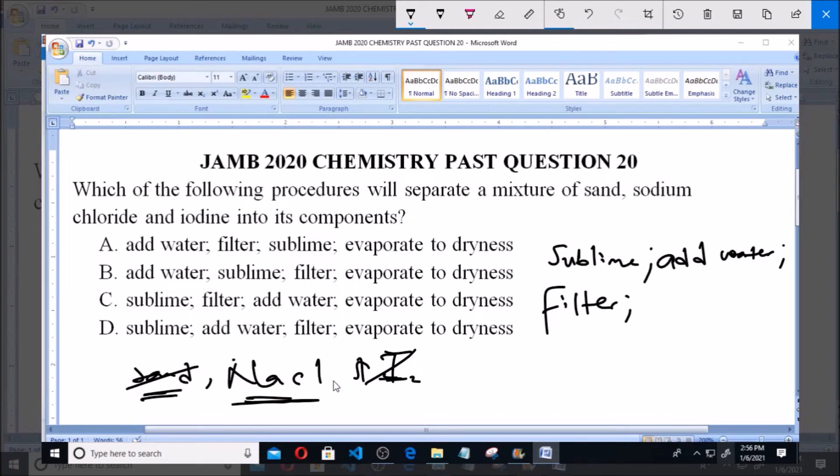To get sodium chloride, since it is soluble, we now evaporate that solution to dryness. By evaporating to dryness, the water component will leave - that is, the water we added will go, giving out sodium chloride. So we evaporate to dryness.